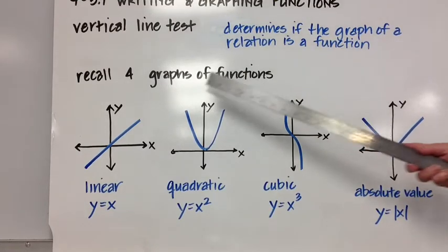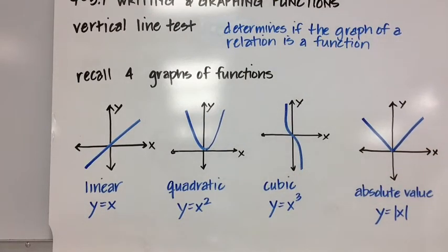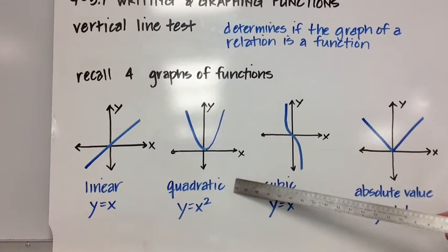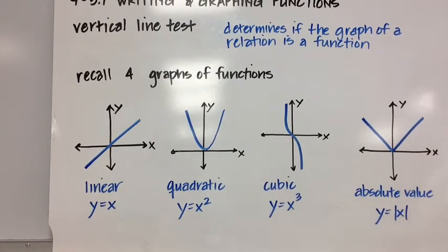The second graph is a parabola, a u-shaped curve. That's a quadratic function represented by y equals x squared. Our third graph is kind of an s-shaped curve, and that's a cubic function, y equals x cubed. And lastly, our v-shaped graph is an absolute value function represented by y equals the absolute value of x.